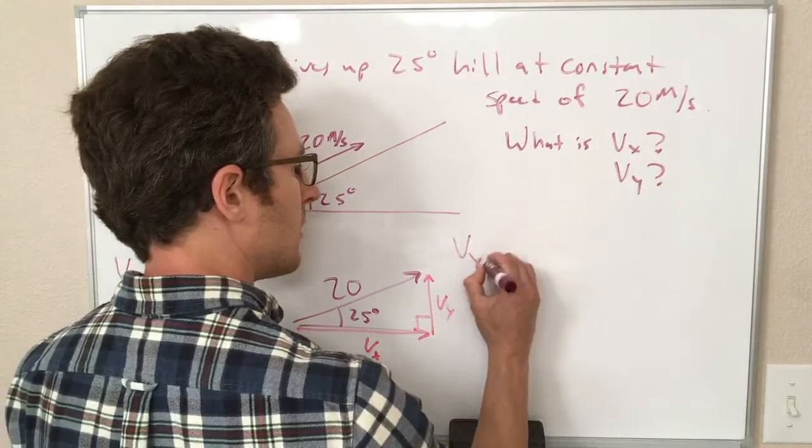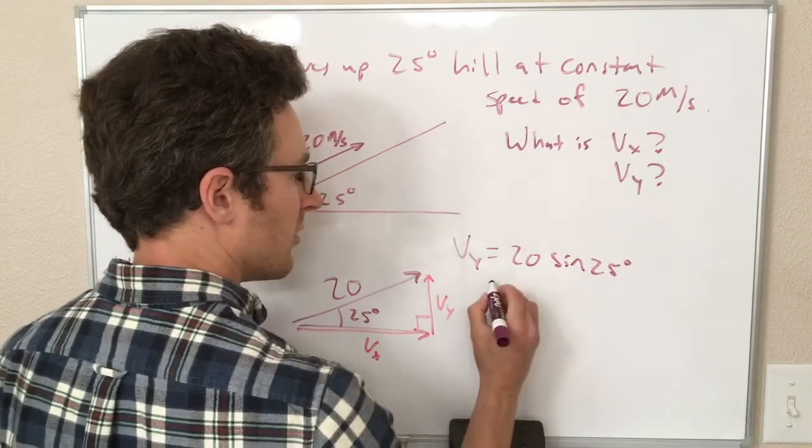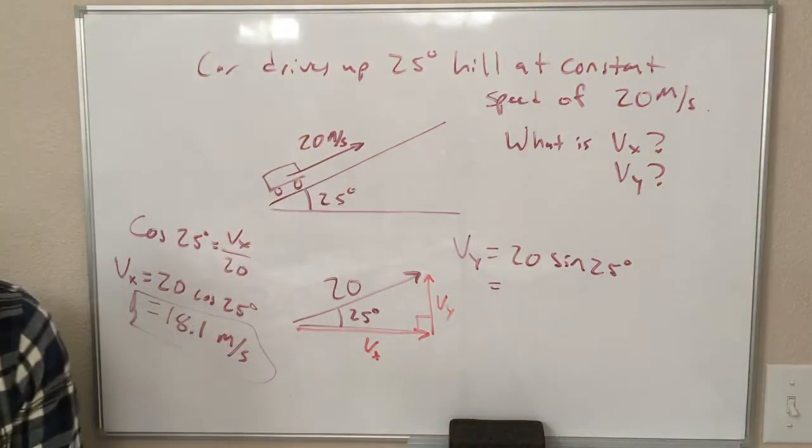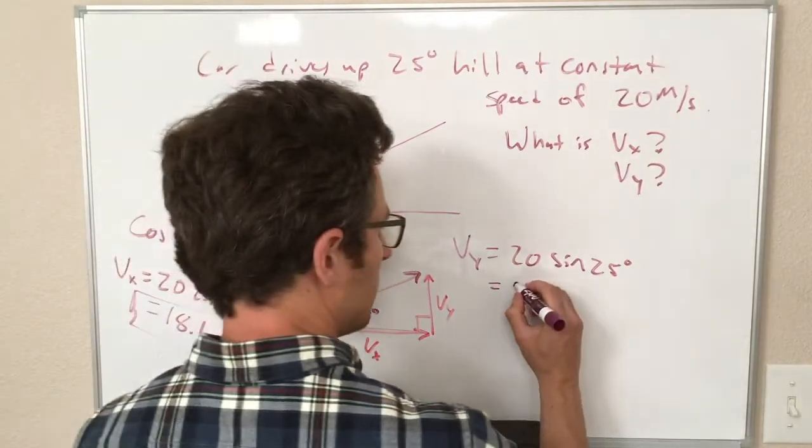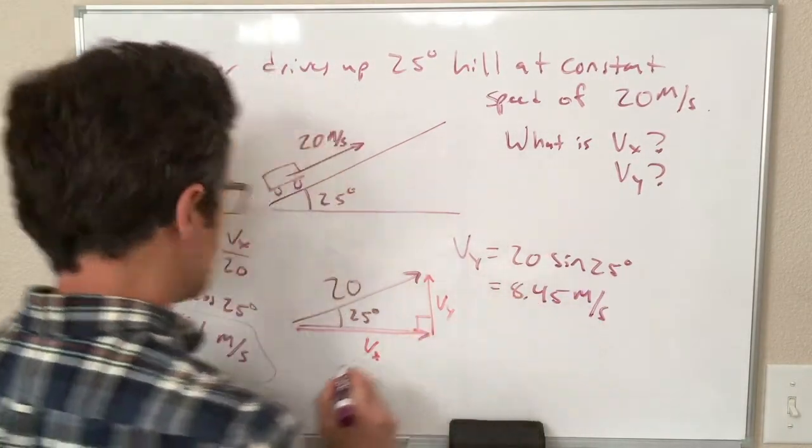so Vy is equal to 20 times the sine of 25 degrees, and that is equal to 8.45 meters per second.